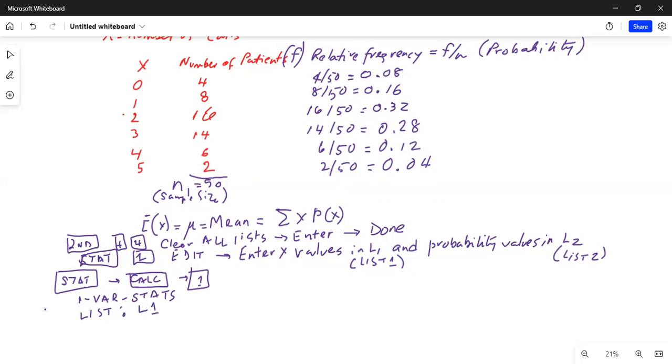Next line is frequency list. It should be empty, nothing after the colon. We have to make it L2 because we have entered the relative frequency or probability in L2. So we press the second button and then 2, and we will get L2.